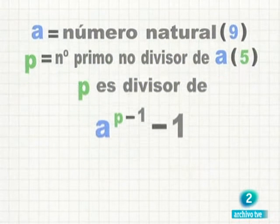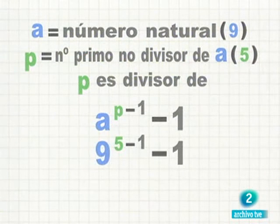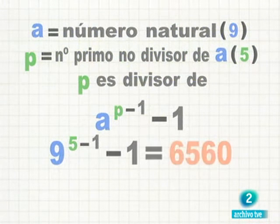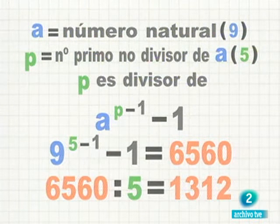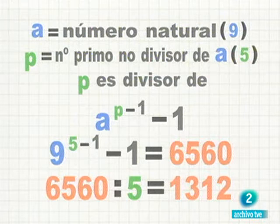En nuestro caso, 9 elevado a 5 menos 1, menos 1. En efecto, 9 elevado a 4 menos 1 es igual a 6.561 menos 1, igual a 6.560, que es divisible por 5. 6.560 dividido entre 5, 1.312.